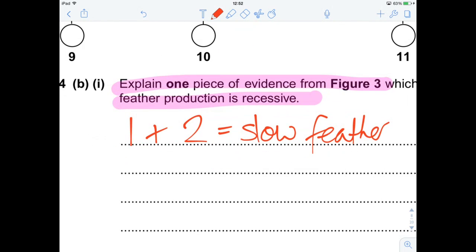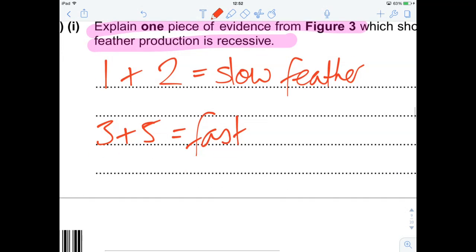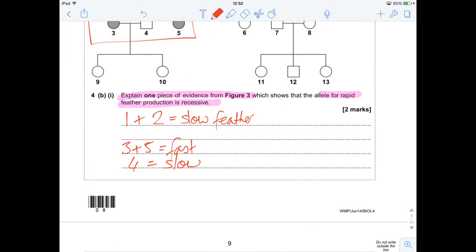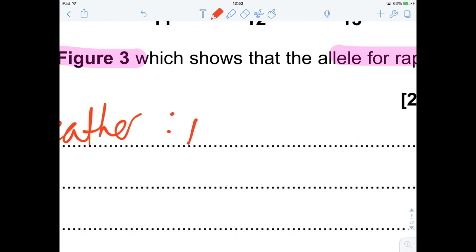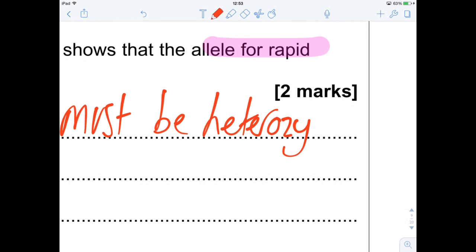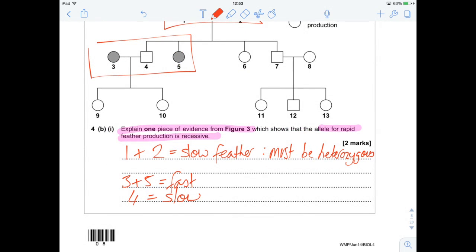Because they produce a mixture of offspring, that means these guys must have one recessive allele each. I'm going to rephrase that, and say they must be heterozygous. Better way of saying it. So they must be heterozygous to get that combination of offspring, and that's pretty much it.